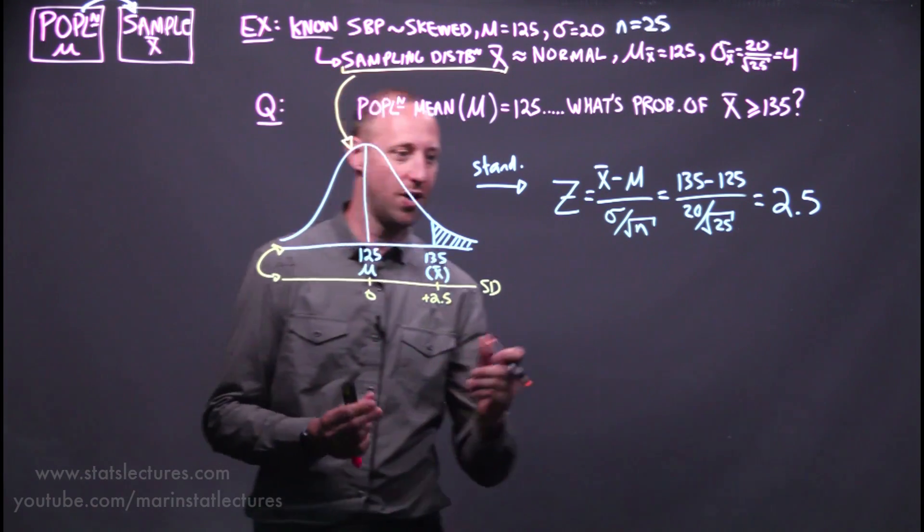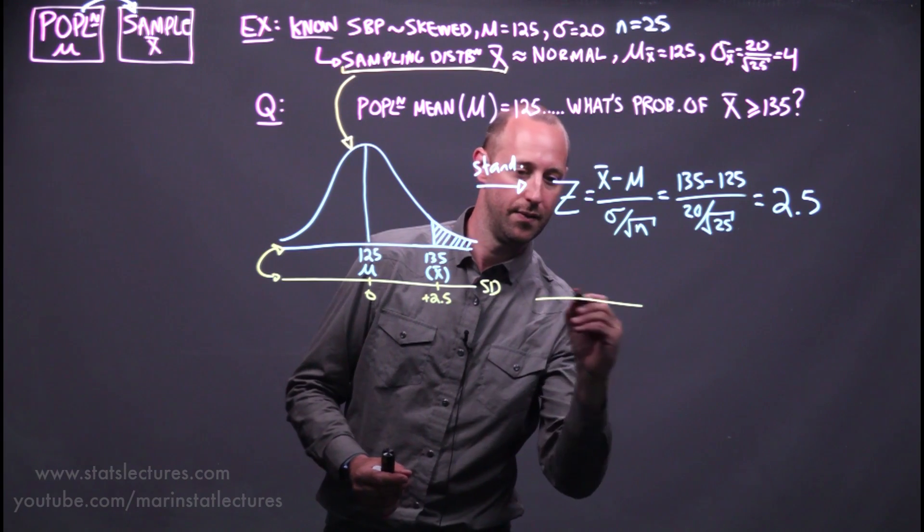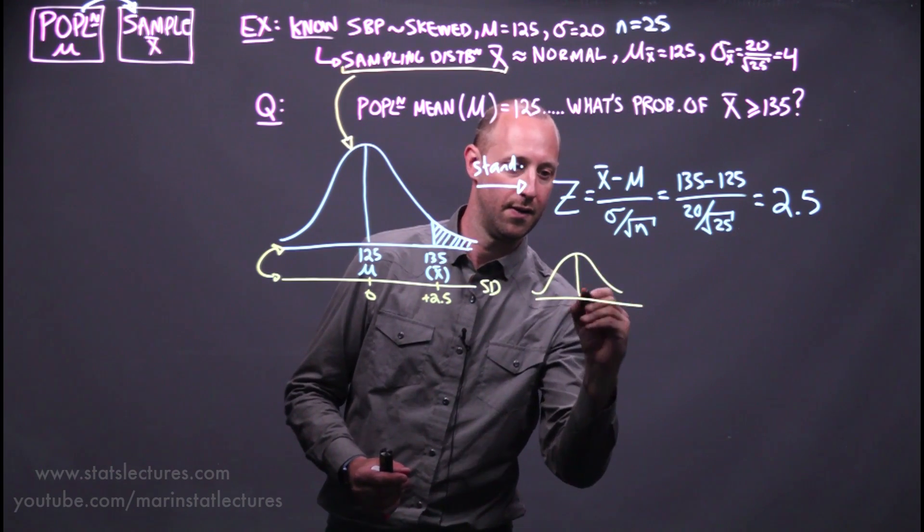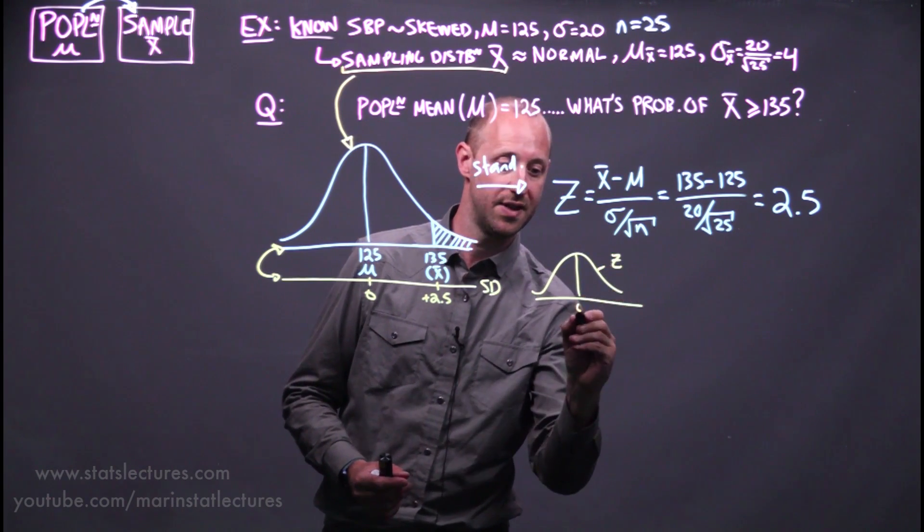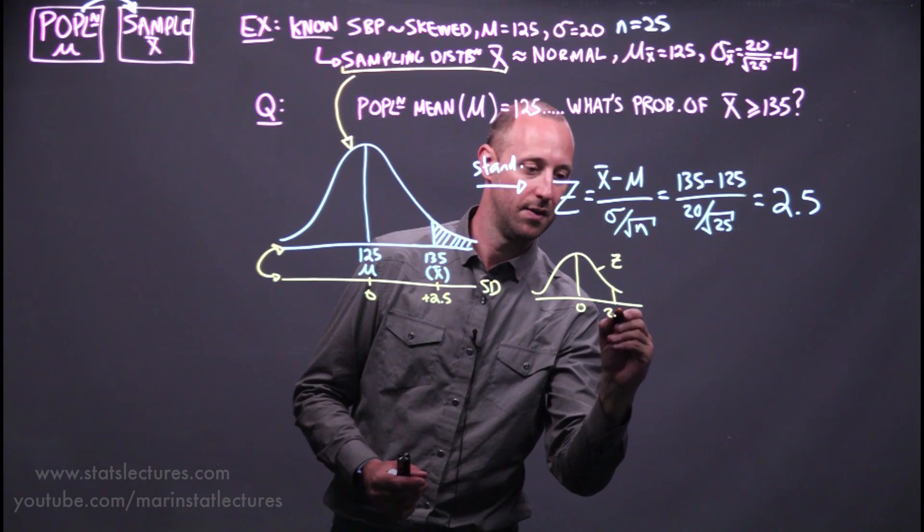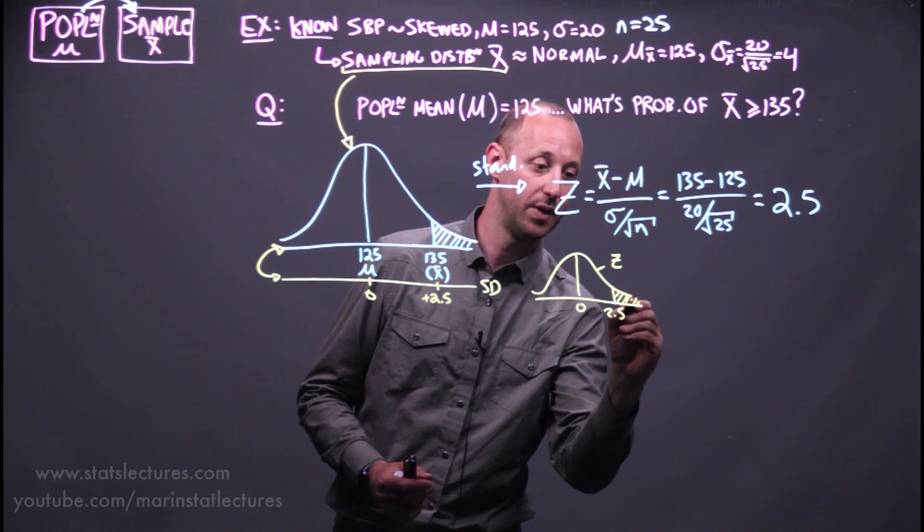Or if you prefer to just redraw this out, looking on Z, the standard normal, we want to find what's the area above 2.5.